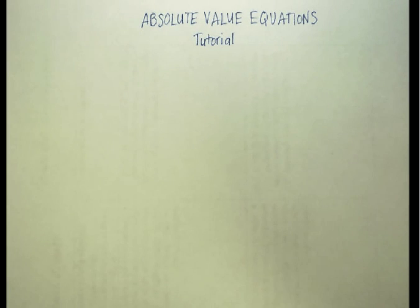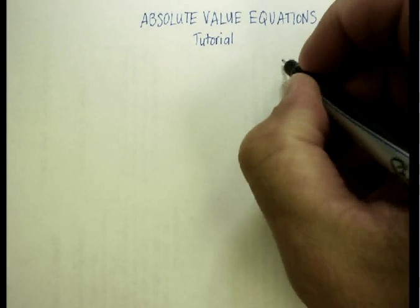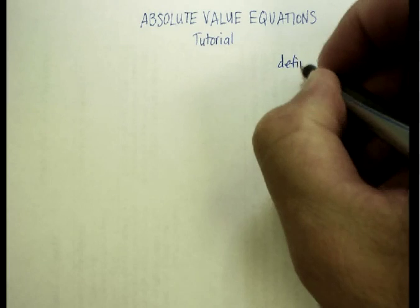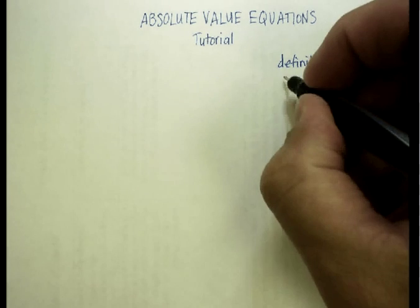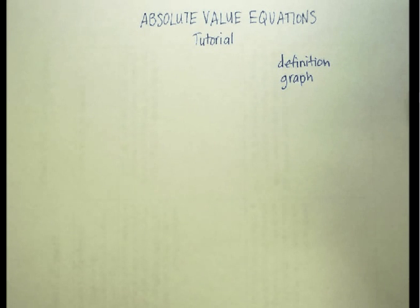I'm going to break up this tutorial into a couple of different parts. I think in this first part, we're going to go over the definition of absolute value. And then I'm going to go over how to graph an absolute value and what it looks like. And I think that might be enough for this first tutorial.